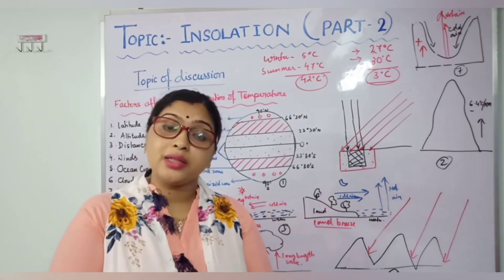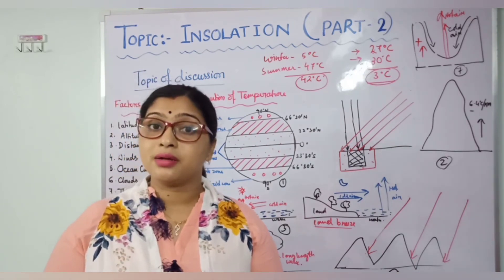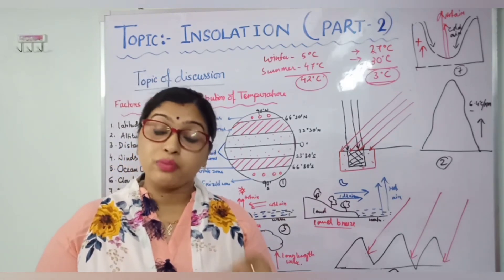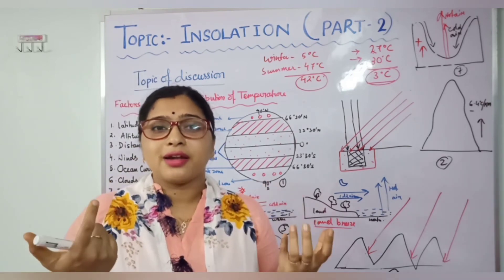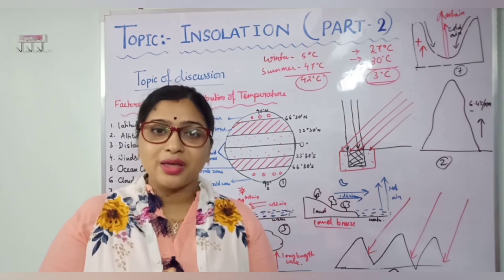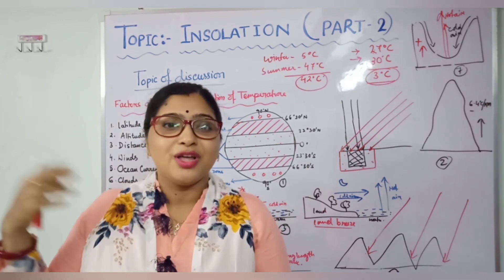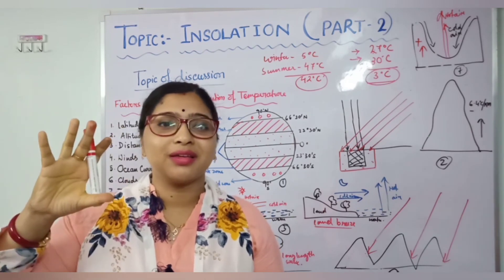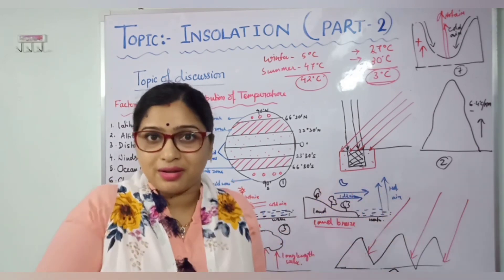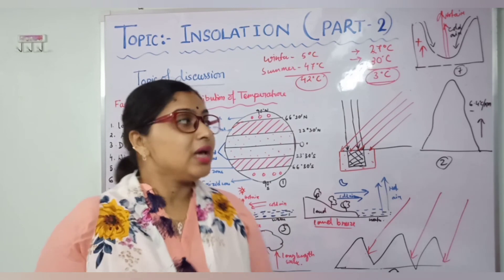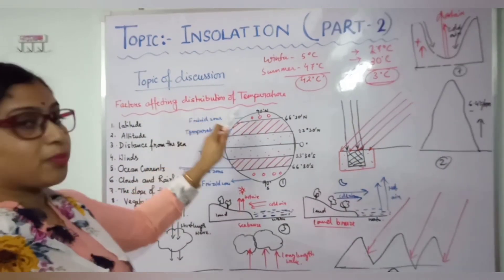Another example: soil that is dark in color has more capacity to absorb heat, while soil that is light in color has less capacity to absorb heat. Dark color always absorbs more heat. That's why in Saudi Arabian countries, people use white clothes — because the temperature is high there, and white color reflects rather than absorbs heat. Even in summer, people prefer to wear light-colored clothes instead of dark color. So these are the factors affecting the distribution of temperature in any area.